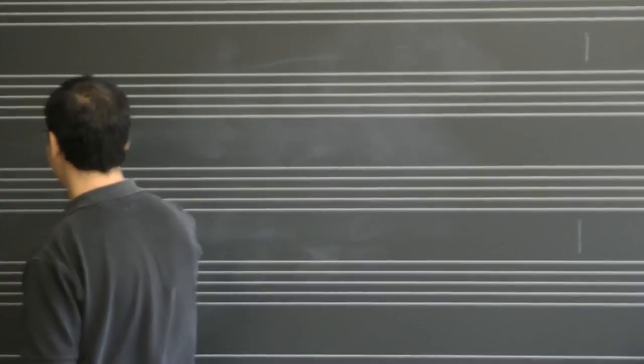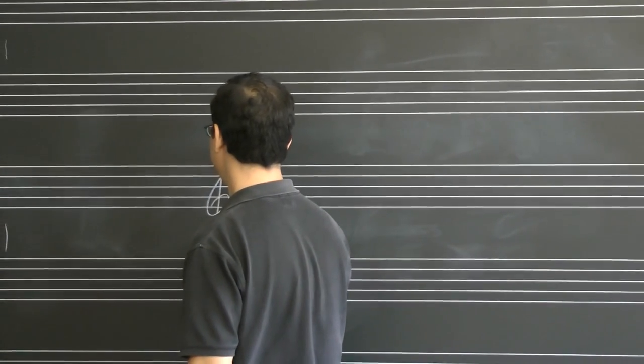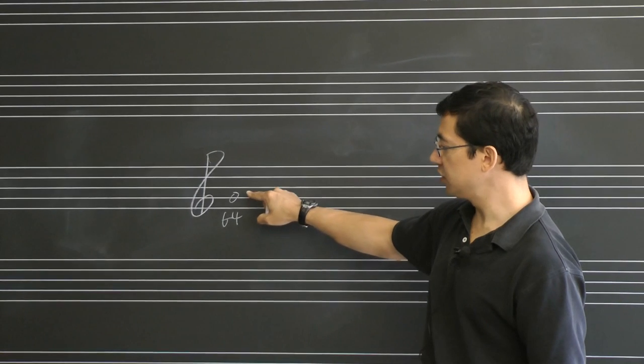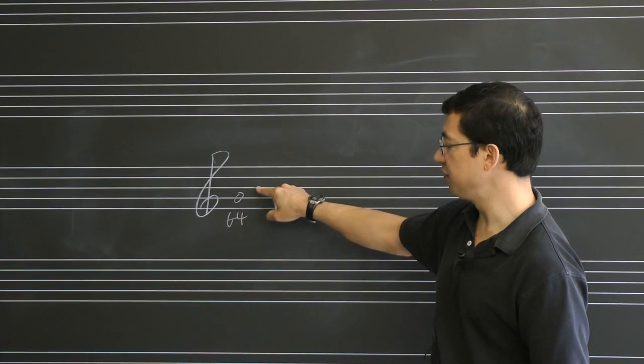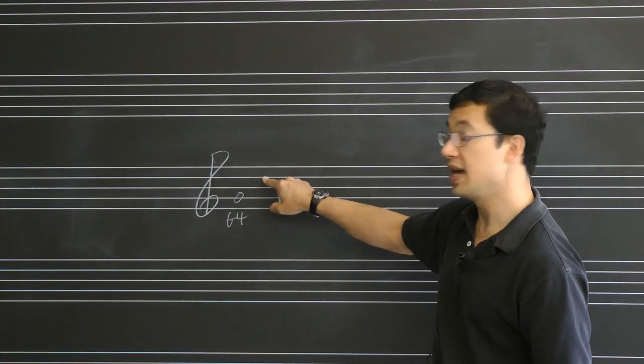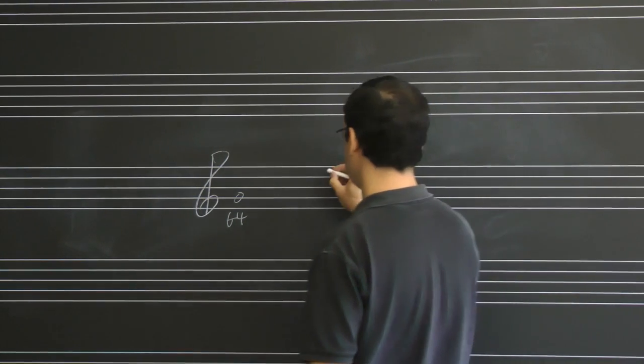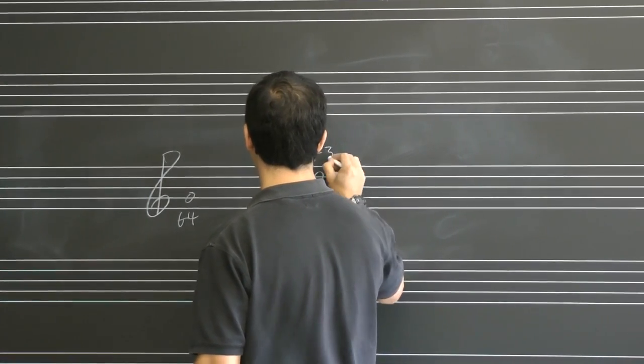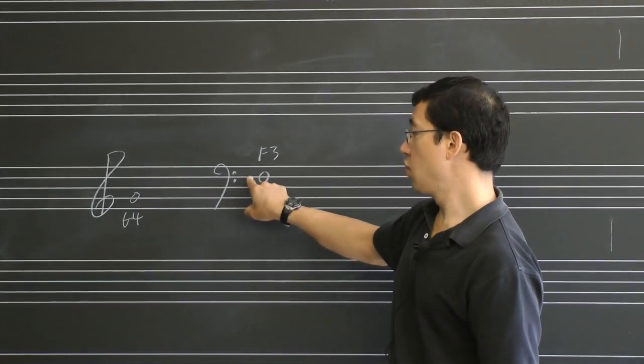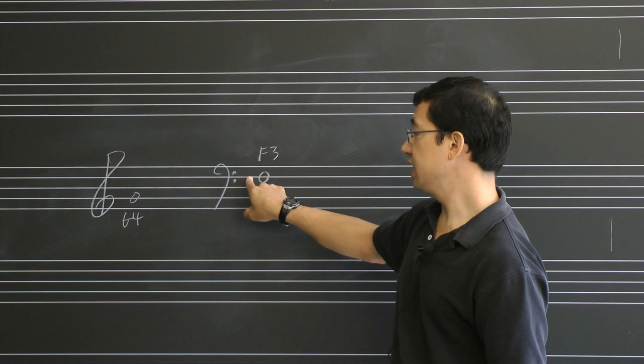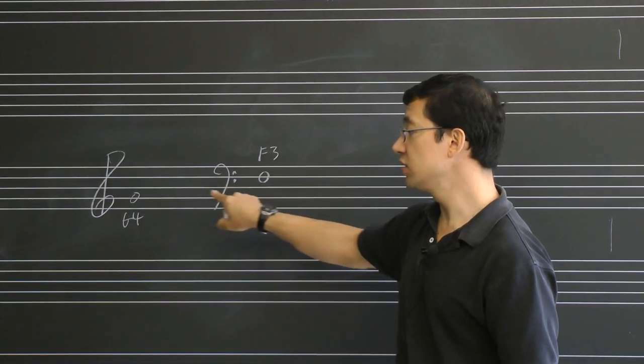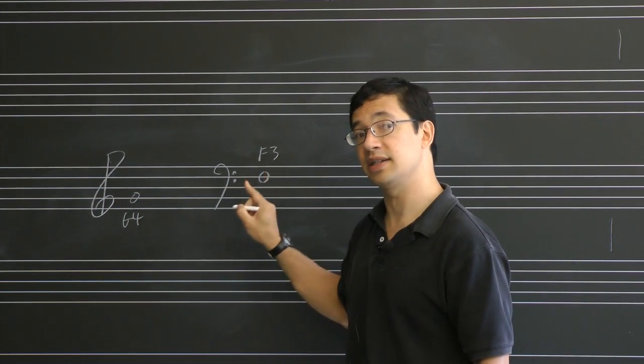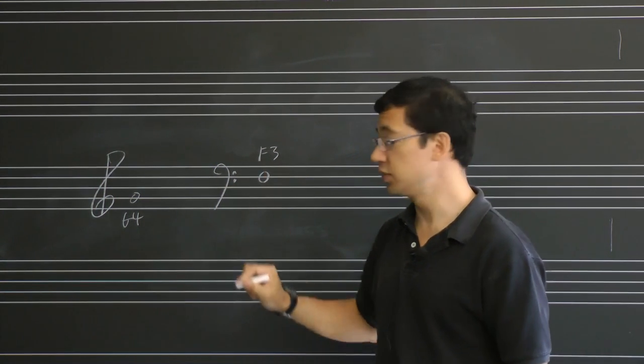So first of all, treble clef. This note is G4, and as you just go up and down, you get G4, A4, B4, C5, D5, et cetera, up and down using the lines and spaces. This is called bass clef when the fourth line is F3. These are the most frequently used clefs. If you don't know these yet, you need to practice and learn these right away. And we'll give you some tools for doing that.